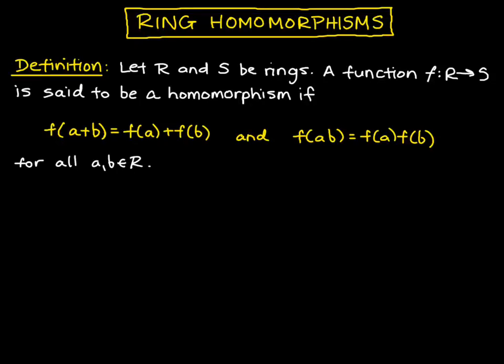Here we discuss ring homomorphisms, so let's start with the definition. Let R and S be rings, then we say a function f from R to S is a homomorphism if the following two properties are satisfied.